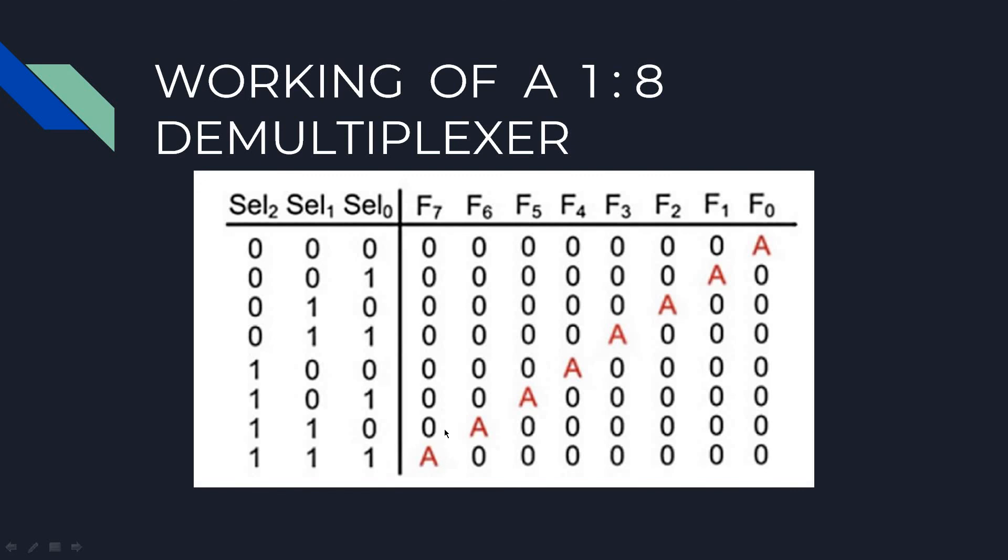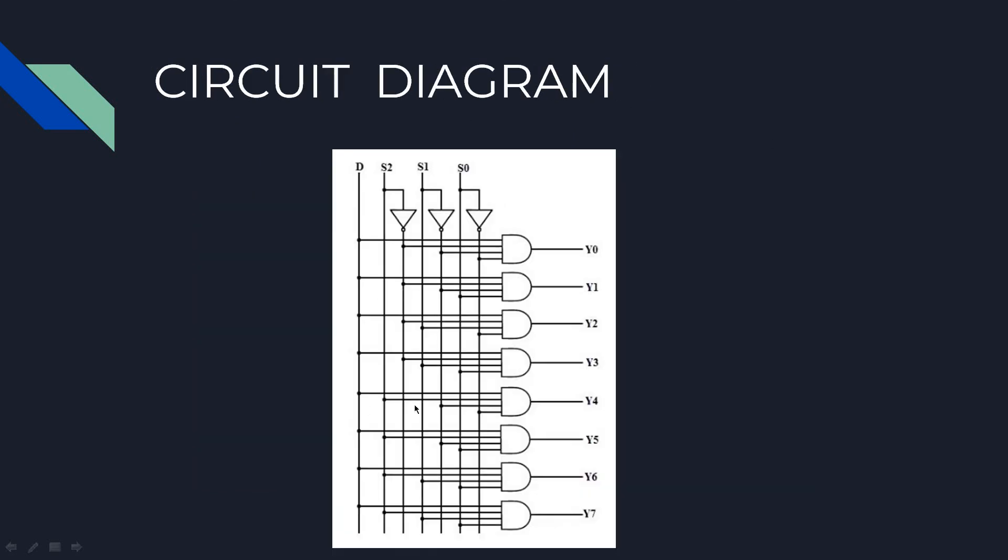Now let's look into the circuit diagram using the gates. You can see that there are 8 output signals and there is only one input that is D, and there are 3 selection lines.